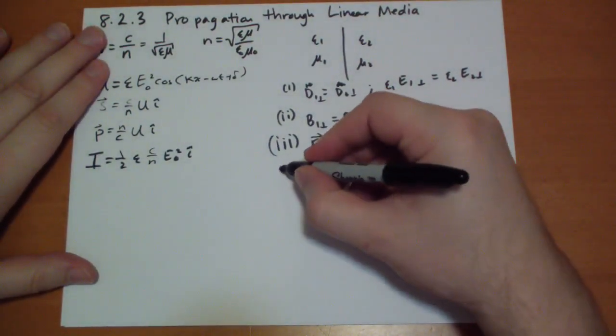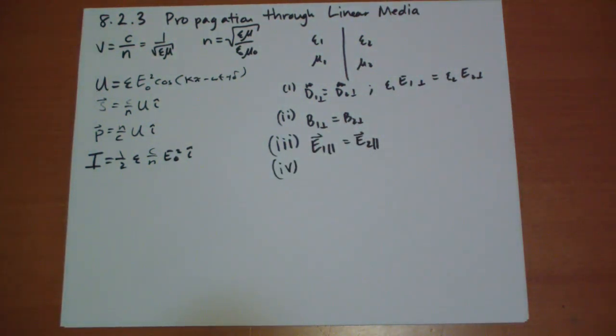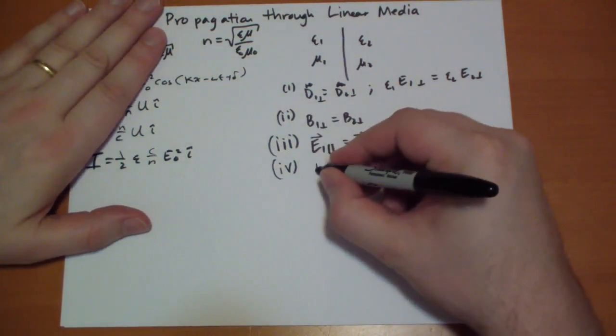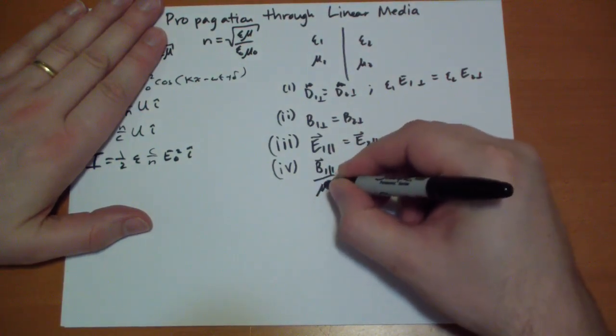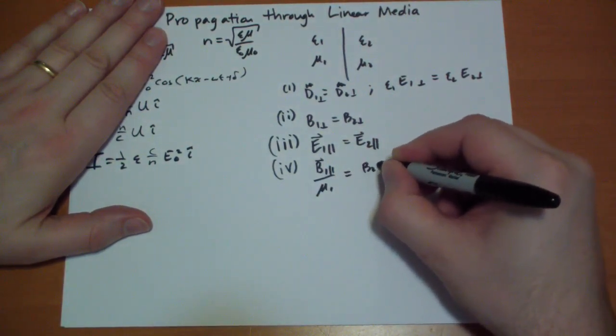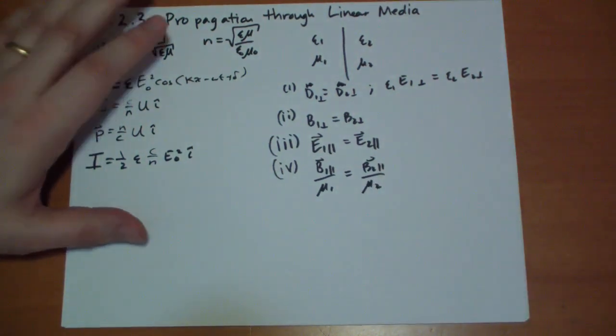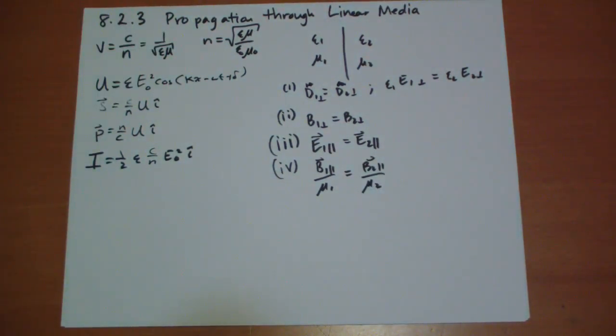And the last rule we get, rule number four, is that if we take an infinitely small Amperian loop that just goes along the boundary there, then we discover that the H field has to jump by the amount of free current at the surface. And since we're dealing with situations where we don't have a free current, then our H fields cannot jump. Well, what's the H field? That's just B one in the parallel direction divided by mu one. That has to be equal to B two in the parallel direction divided by mu two. So these are the four rules that we're going to have to satisfy when we calculate our boundary conditions.